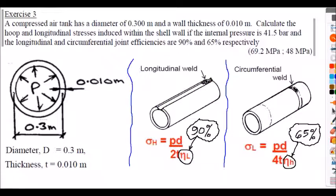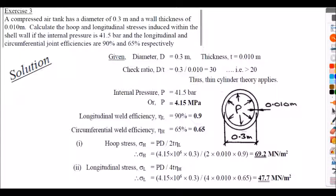To summarise: 90% efficiency for the longitudinal weld affects the hoop stress, and 65% efficiency for the circumferential (hoop) weld affects the longitudinal stress. Apply the appropriate weld efficiencies carefully. The worked calculations are shown on the slide.